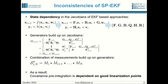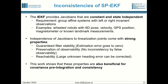This causes covariance pre-integration to depend on good linearization points. The IEKF, however, provides Jacobians that are constant and state-independent. The requirement is that we work with group-affine systems with left or right invariant observations, but this is not very restrictive. As an example, wheeled robots with six-degree-of-freedom pose, velocity, GPS position, or magnetometer measurements all fulfill this requirement, as do known landmarks, which we use in this work.